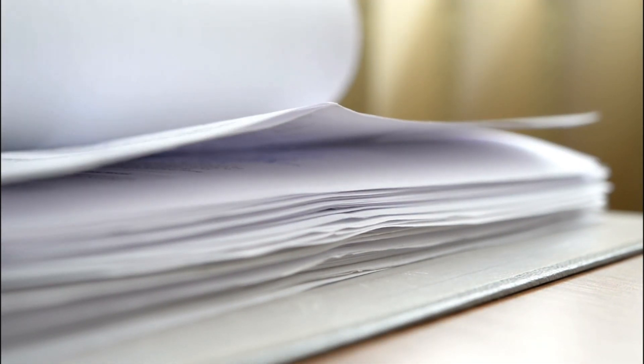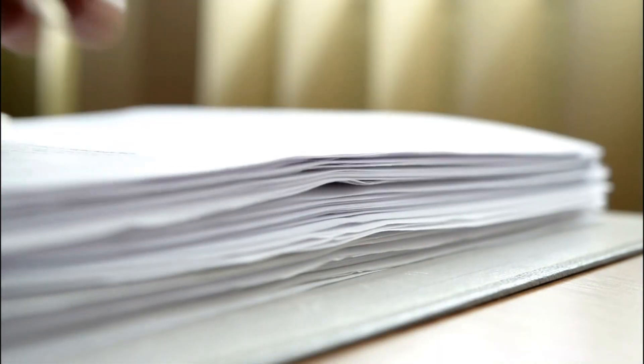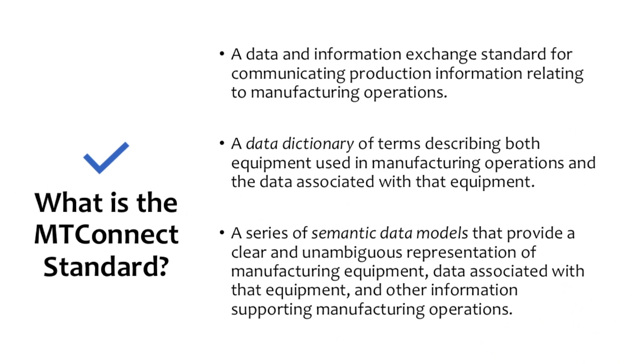The MTConnect standard is organized into a series of documents, each focused on a specific type of information associated with shop operations. The content of each document is structured based on two very specific concepts: the data dictionary and a semantic data model. These two concepts form key components of the MTConnect standard and fundamentally differentiate MTConnect from other communication standards traditionally found in manufacturing. The data dictionary defines a consistent set of terms used to describe information and data gathered from shop floor operations. When various pieces of equipment publish information using this common data dictionary, that data is easier to understand and can be used directly for further analysis without requiring additional manipulation to get the data in a generic format.